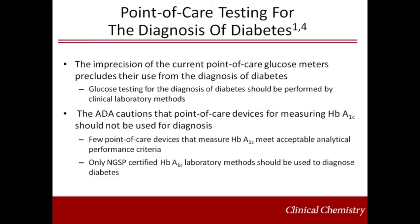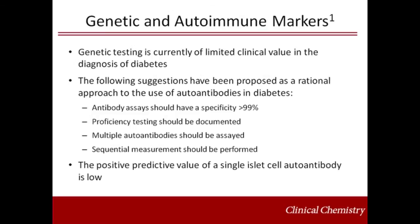Therefore, no objective information is available concerning their performance in the hands of those who measure hemoglobin A1C in patient samples. A recent evaluation revealed that few point-of-care devices that measure hemoglobin A1C met acceptable analytical performance criteria. Currently, only NGSP certified hemoglobin A1C methods performed in clinical laboratories should be used to diagnose diabetes. Genetic markers are currently of limited clinical value in the diagnosis of diabetes. However, mutational analysis is rapidly emerging for classifying diabetes in the neonate and in young patients with a dominant family history of diabetes.